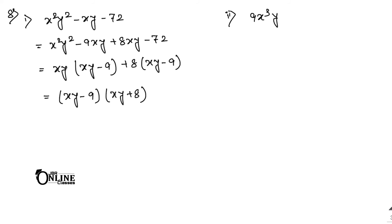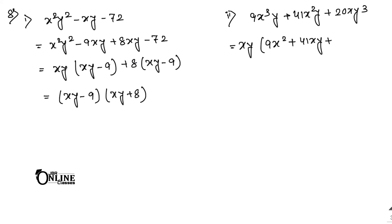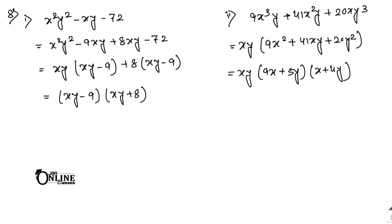Sum number 8.2: 9x³y plus 41x²y minus 20xy³. First take out xy common: xy(9x² plus 41xy plus 20y²). By middle-term factorization, 41 splits as 36 plus 5, giving (9x plus 5y)(x plus 4y) as the factored bracket. Final answer: xy(9x plus 5y)(x plus 4y).